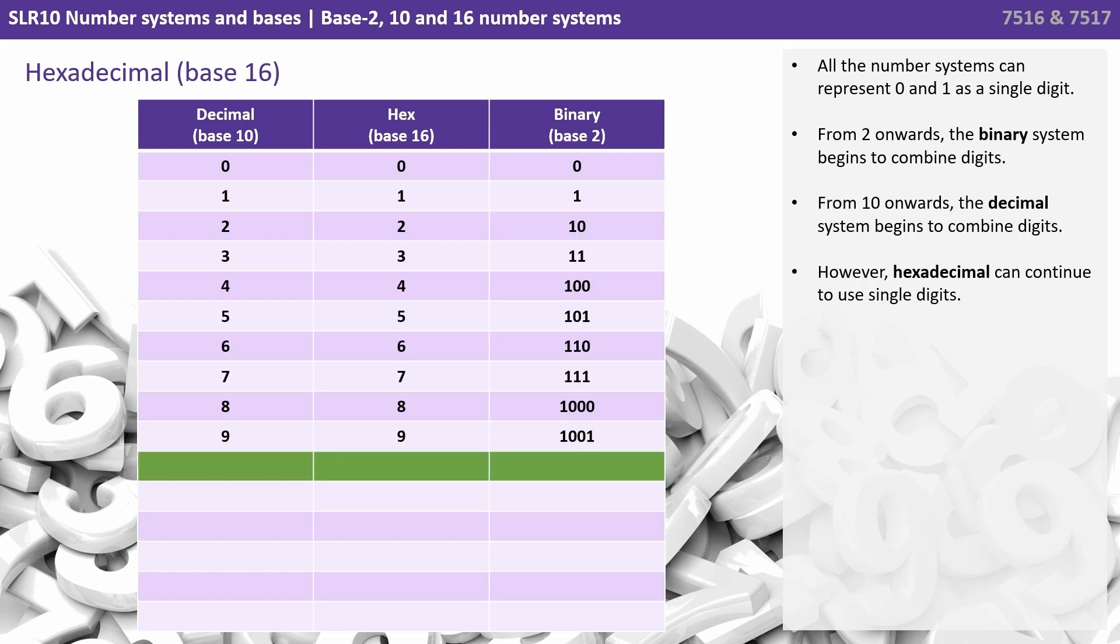From 10 onwards, the decimal system starts to combine digits. However, hexadecimal can continue to use single digits. So the denary number 10 is 10 in decimal, it's 1010 in binary, and it's A in hexadecimal. This continues until we get to the number 15, which is 15 in decimal, F in hexadecimal, and then 1111 in binary.